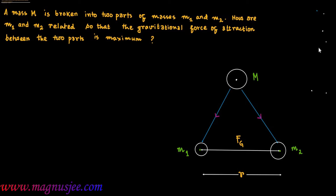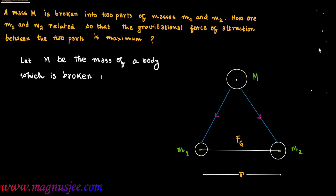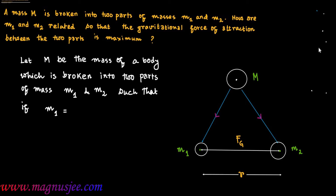Let capital M be the mass of a body which is broken into two parts of masses m1 and m2, such that m1 = m and m2 = M − m.